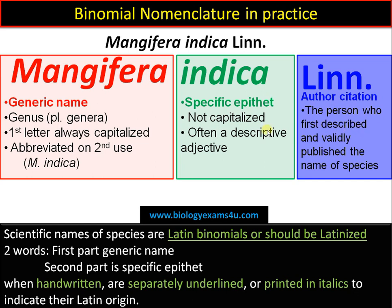The author citation refers to the person who first described and validly published the name of the species. Other rules include: scientific names of species are Latin binomials or should be latinized, irrespective of origin, based on the rules of the Latin language. The name consists of two words — the first is the generic name and the second is the specific epithet. When handwritten, they should be separately underlined; in print, they should be in italics to indicate their Latin origin.